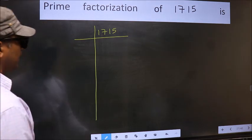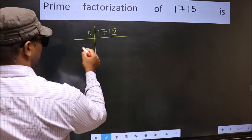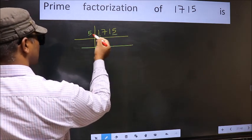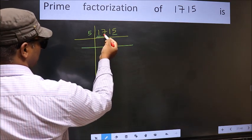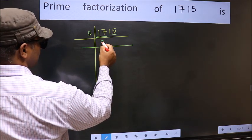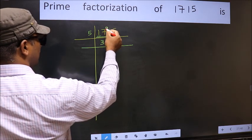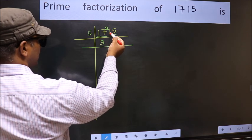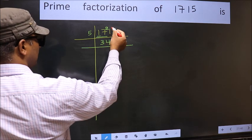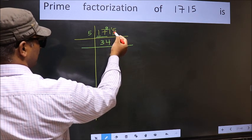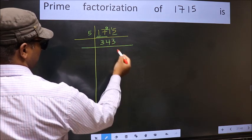Next, in this number, the last digit is 5, so we take 5. The first number 1 is smaller than 5, so we take two digits, 17. A number close to 17 in the 5 table is 5×3=15. 17-15=2, carry forward 2 to make 21. A number close to 21 in the 5 table is 5×4=20. 21-20=1, carry forward 1 to make 15. When do we get 15 in the 5 table? 5×3=15.